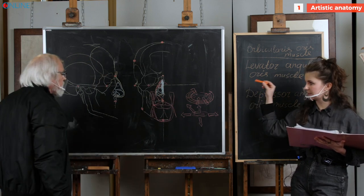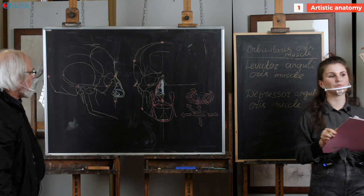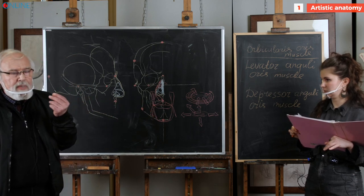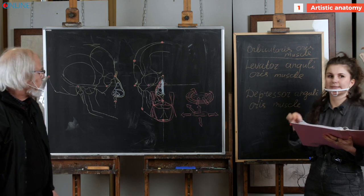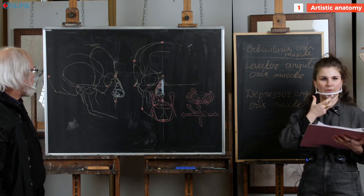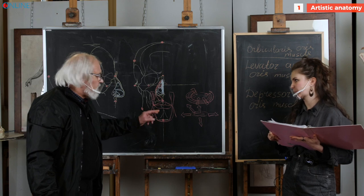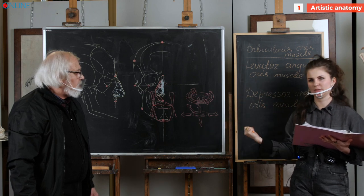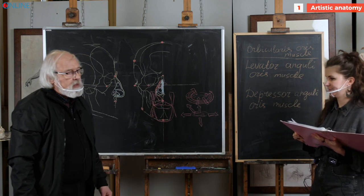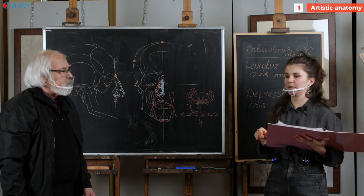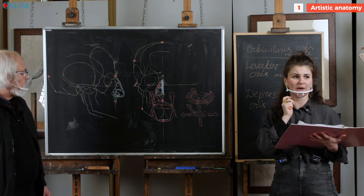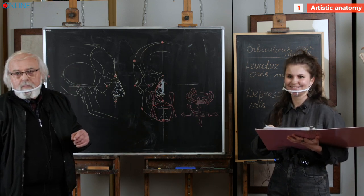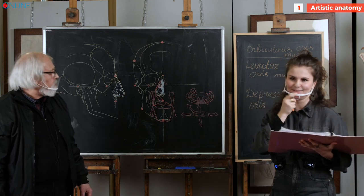This muscle loop consists of five elements. You will understand that this loop strengthens the mouth. If even one part out of this chain disappears, the mouth will be dislocated — as happens with strokes, for example.